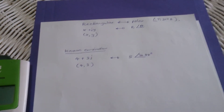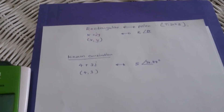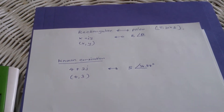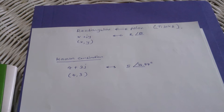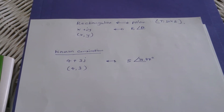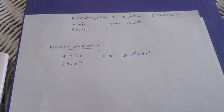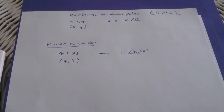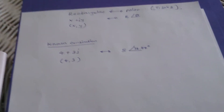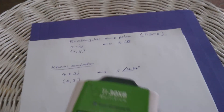I'm going to show you how to convert between rectangular form and polar form using the TI-30XP calculator. I've selected a known combination: rectangular form 4 plus 3j, which converts to polar form with magnitude 5 and angle 36.87 degrees.